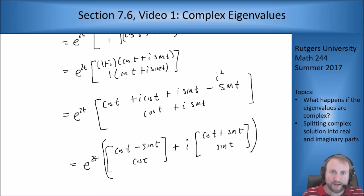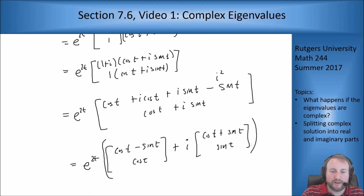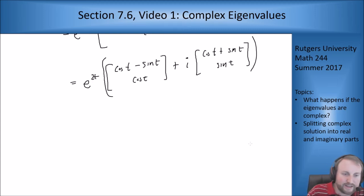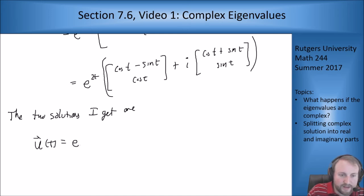So then I want to split this into real and imaginary parts so what I get. So what I get is I will get my two solutions from this right here. So the two solutions I get are u of t equals e to the 2t times (cosine t minus sine t, cosine t)